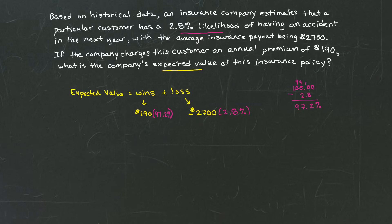Let's put it all together in a more formal equation. So we're going to say that our expected value is equal to the likelihood of a win, which is 97.2%, or if we like, 0.972, times the win amount that the insurance company gets, which is the policy amount, $190.